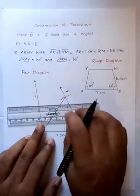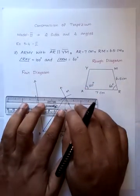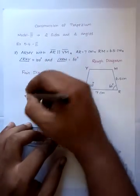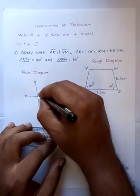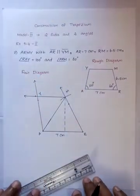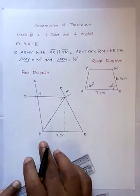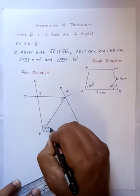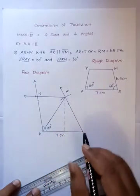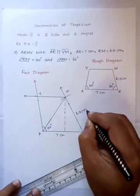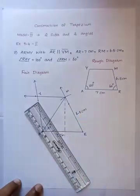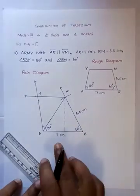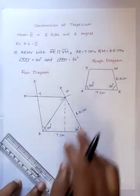So 90 degrees mark — the point is joined. Here is the line segment. The two lines meet at Y. Now we have the Trapezium A, R, M, Y. Angle A is 100 degrees, 6.5 cm is cut. The angle at R is 60 degrees and RM is 6.5 cm. AR is 7 cm with 100 degrees.